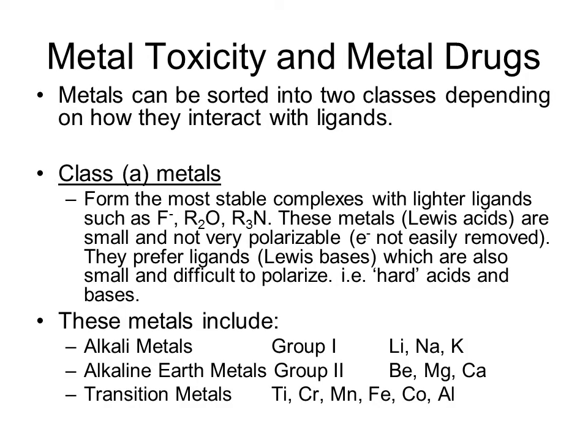Metals can be sorted into two classes depending on how they interact with ligands. Class A metals form the most stable complexes with lighter ligands such as ones that contain nitrogen, oxygen, or fluoride. These metals, also known as Lewis acids, are small and not very polarizable, meaning their electrons are not easily removed. They prefer ligands which are Lewis bases, also small and difficult to polarize. These are known as hard acids and bases.